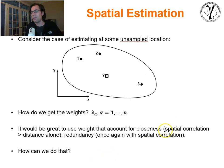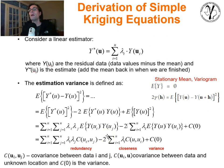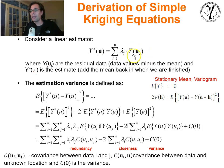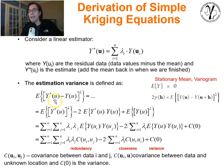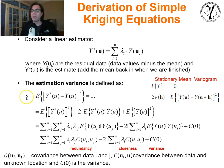We want something that accounts for closeness, redundancy, and spatial continuity. Let's pose a new construct. We define estimation variance — it will come up many times, including when we talk about machine learning. Estimation variance is the expectation of the estimate minus the true (unavailable) value at the unknown location, squared. If it's centered on zero, it's just a variance.